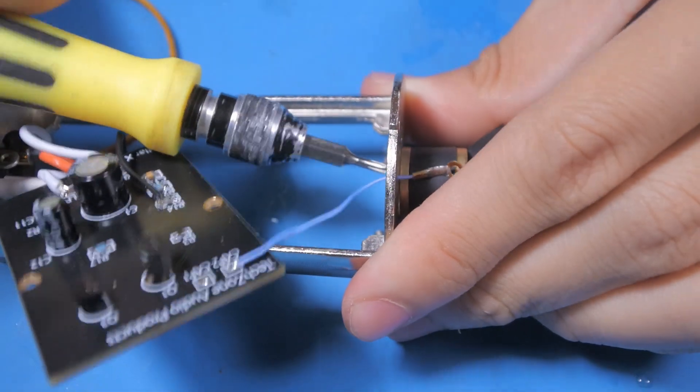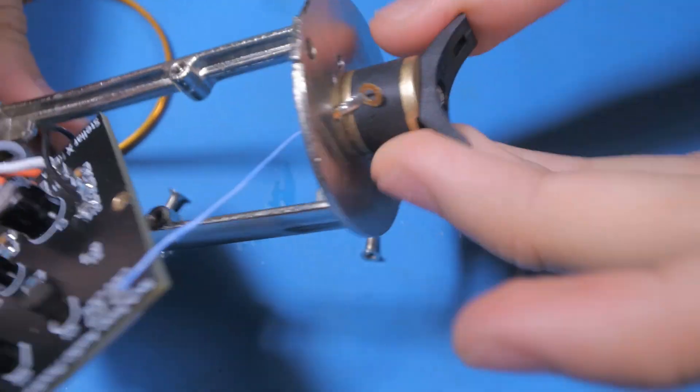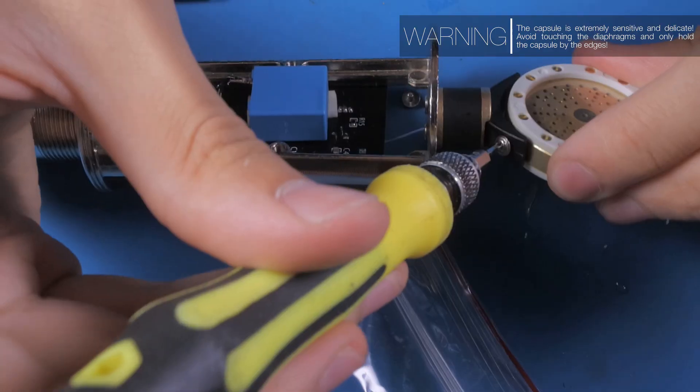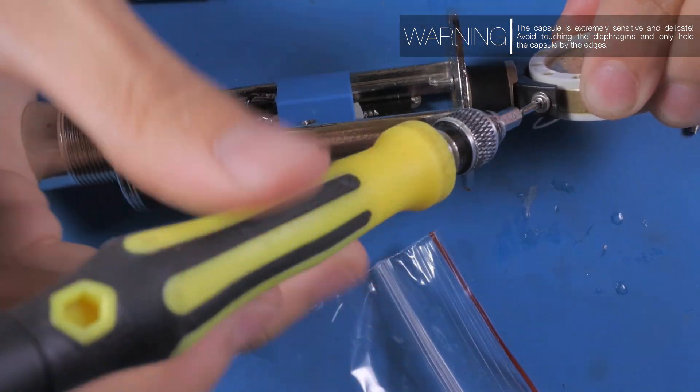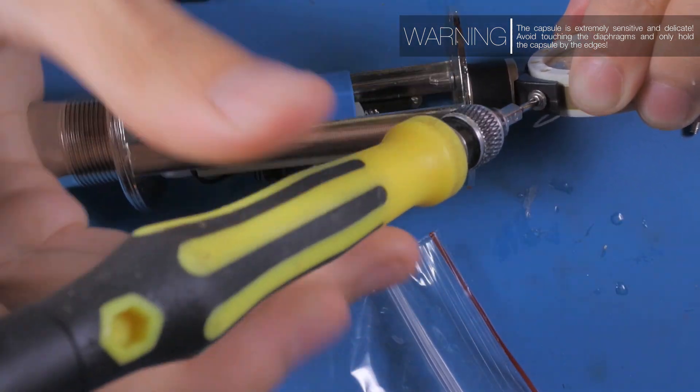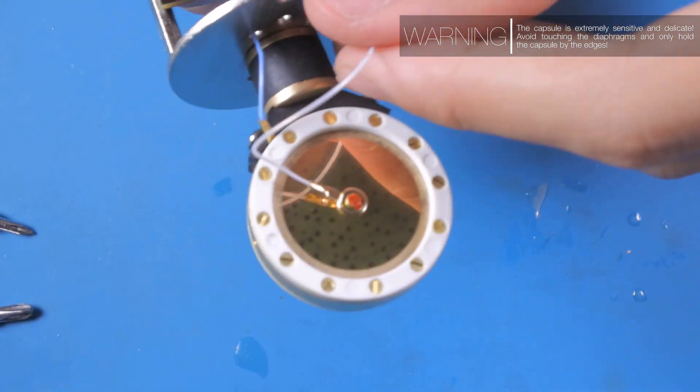Next, we screwed in the mounts provided with the capsule. Using the included M2.5 screws, we mounted the capsule and also provided a lead connection between the back plates of the capsule to the board.